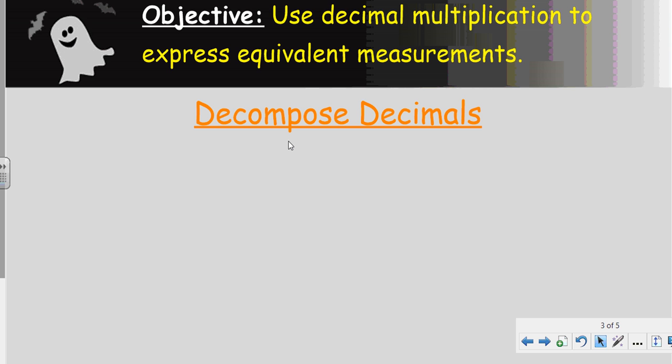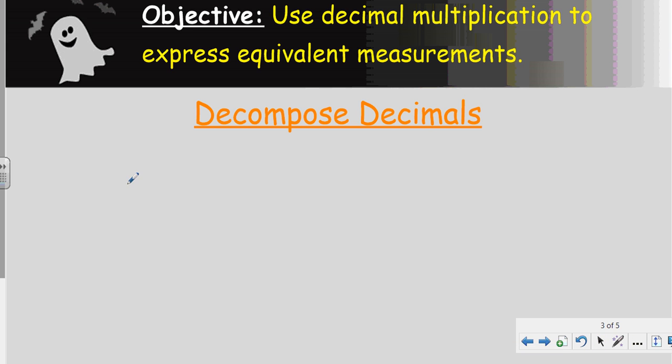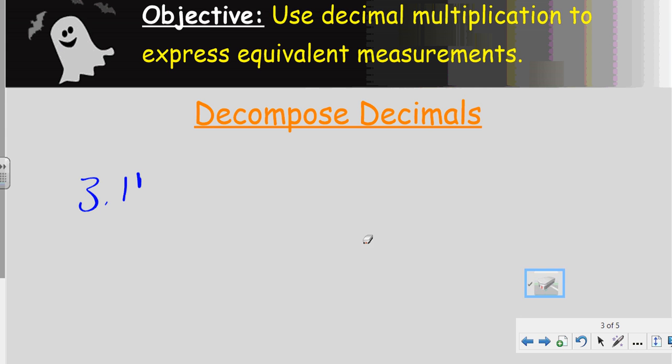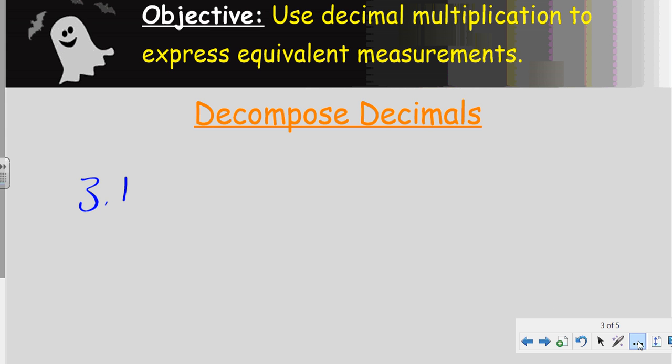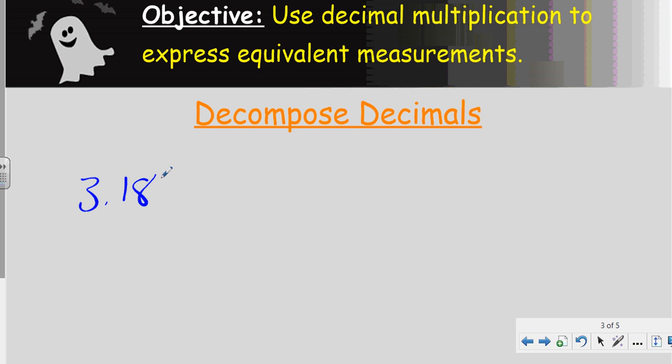Let's go ahead and decompose some decimals. We've done this before. It's all kind of review to build on today's lesson here. We have 3.184. I like that number.